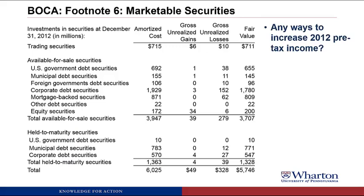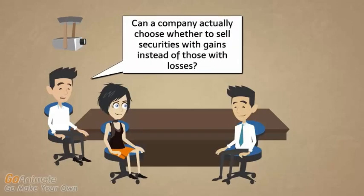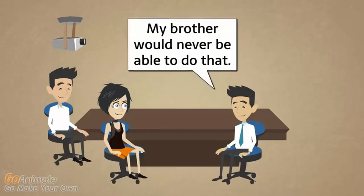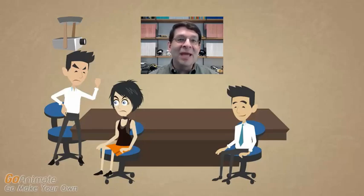Last question: are there any ways to increase 2012 pre-tax income by changing how we manage our marketable securities? One thing we could have done is sell the available for sale securities with unrealized gains, which would have brought those gains from AOCI into the income statement, increasing pre-tax income by as much as 39. Can a company actually choose to sell securities with gains instead of those with losses? Yes, a company could absolutely choose to sell certain securities that had gains versus those with losses. There is a technical term for this activity: it's called cherry picking. One of the reasons we look through the financial statements is to try to get a sense of whether managers may have been acting that way.